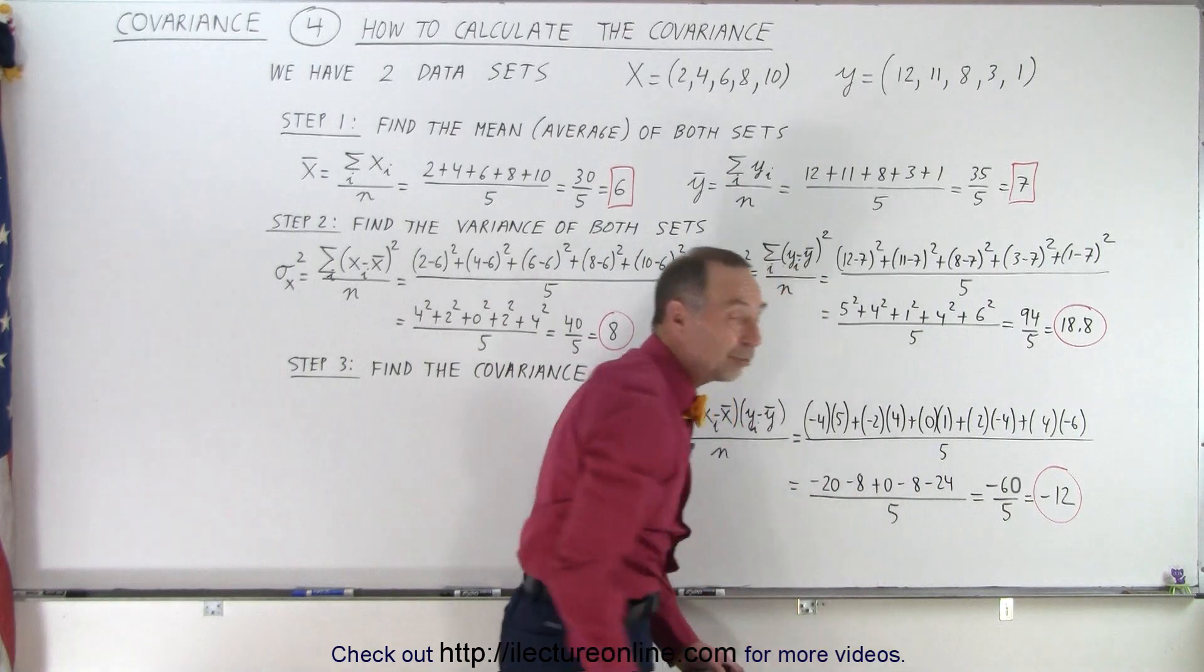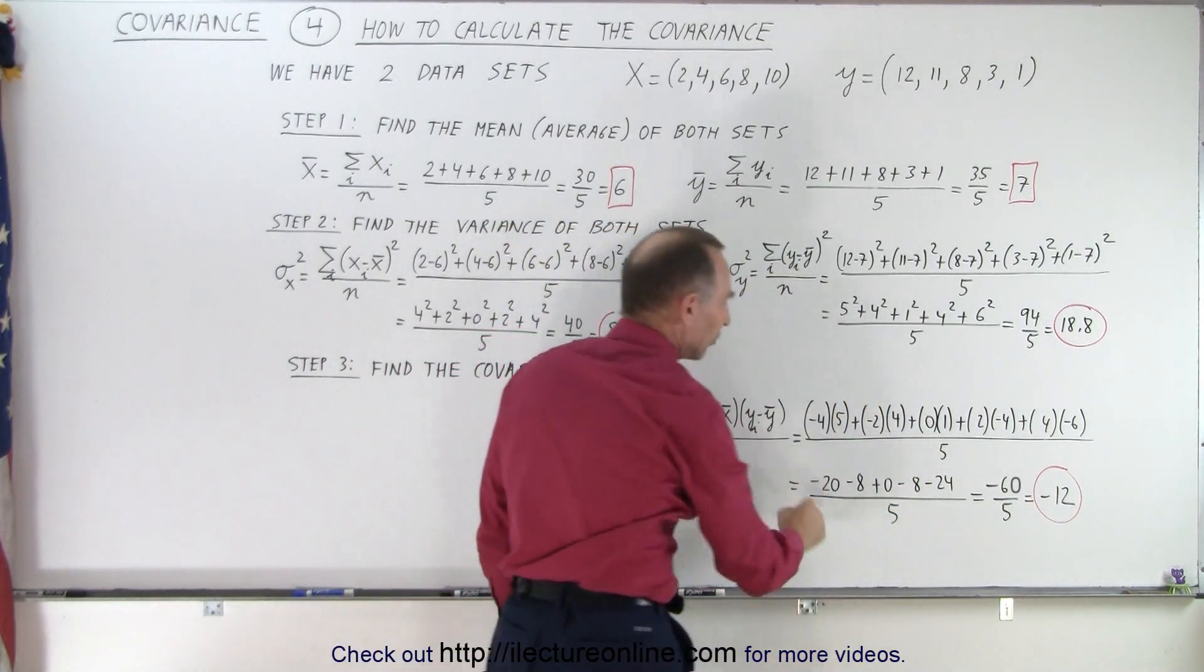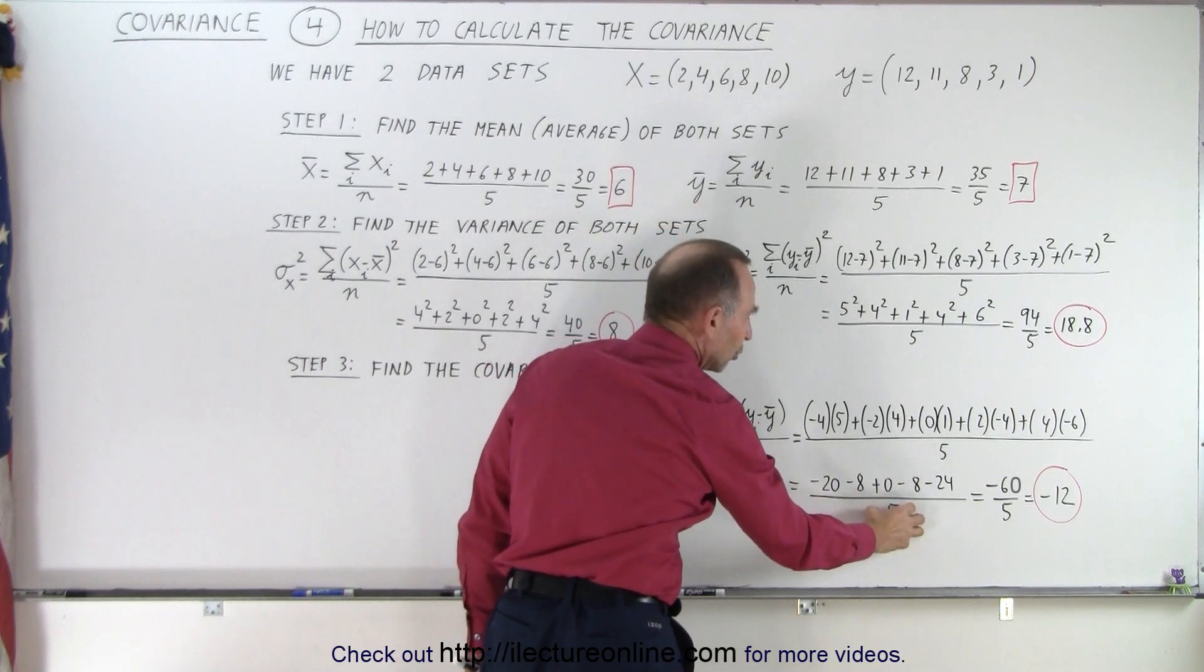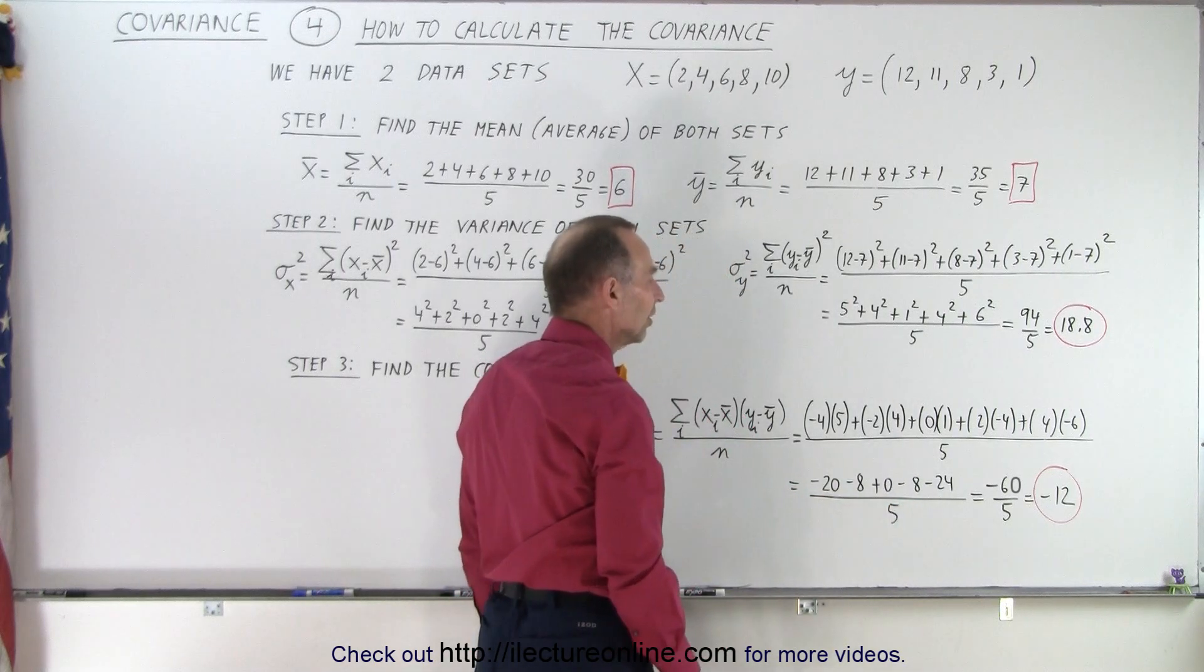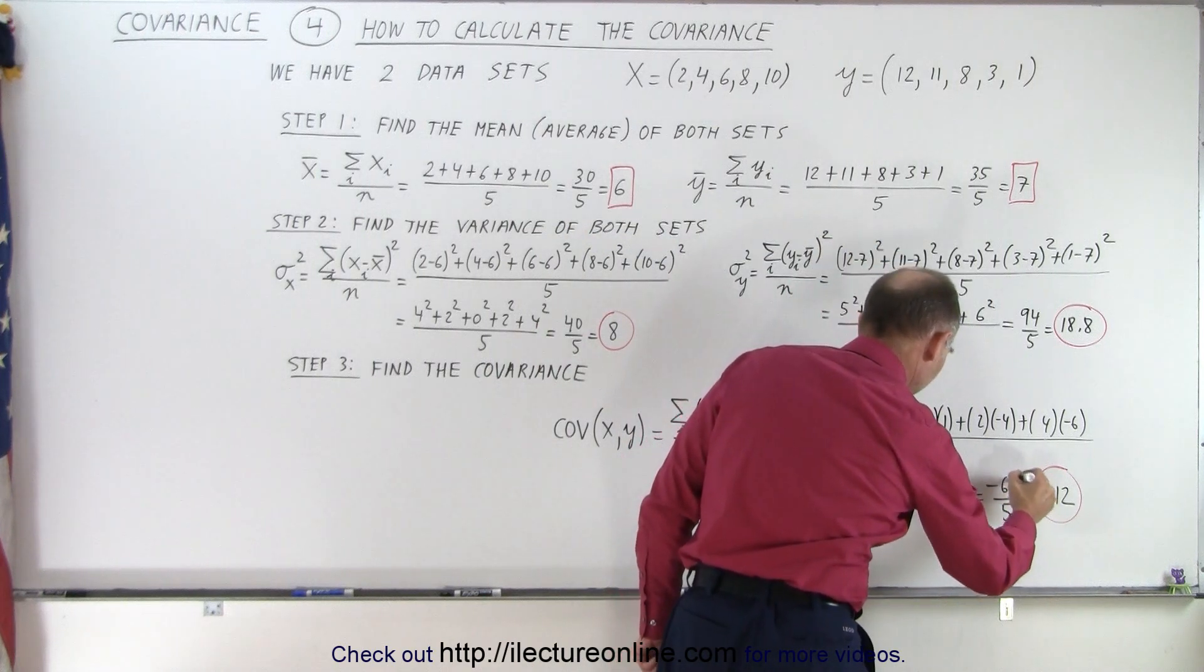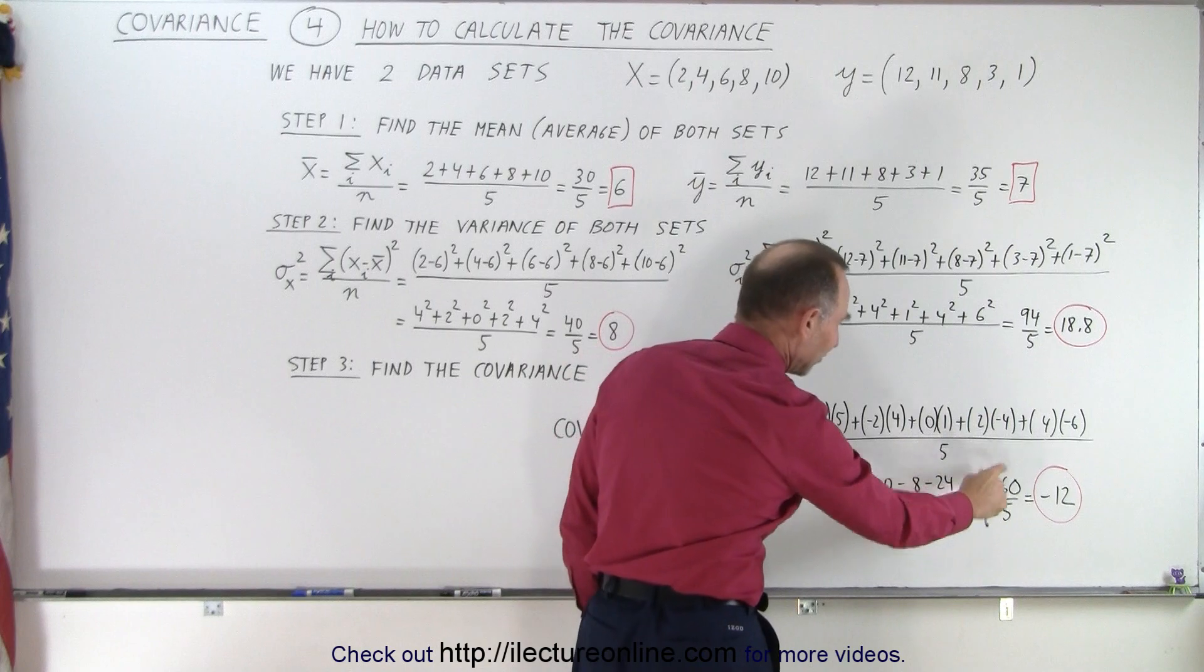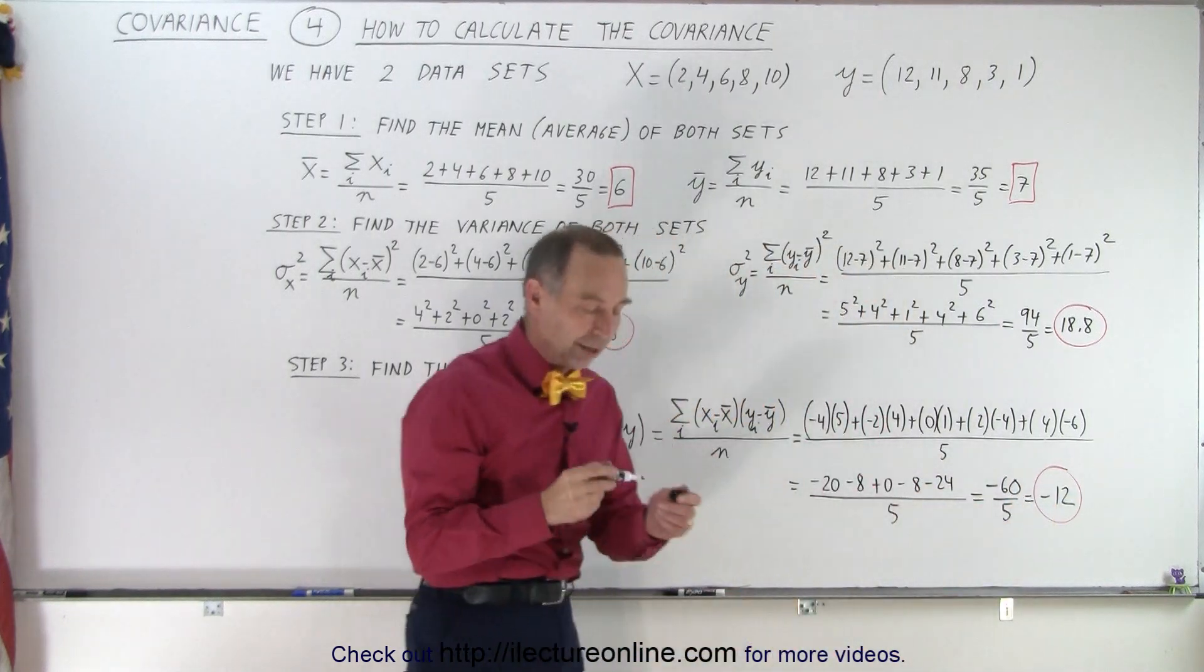Multiply them all together. Notice in this case, we get all negative numbers, except for the one in the middle. Zero times one is zero. Divide by the total number of numbers in the datasets. So we end up with, oh, another mistake here. This is negative 60. I think 24, 44, 60. Yes, negative 60 divided by 5, negative 12.